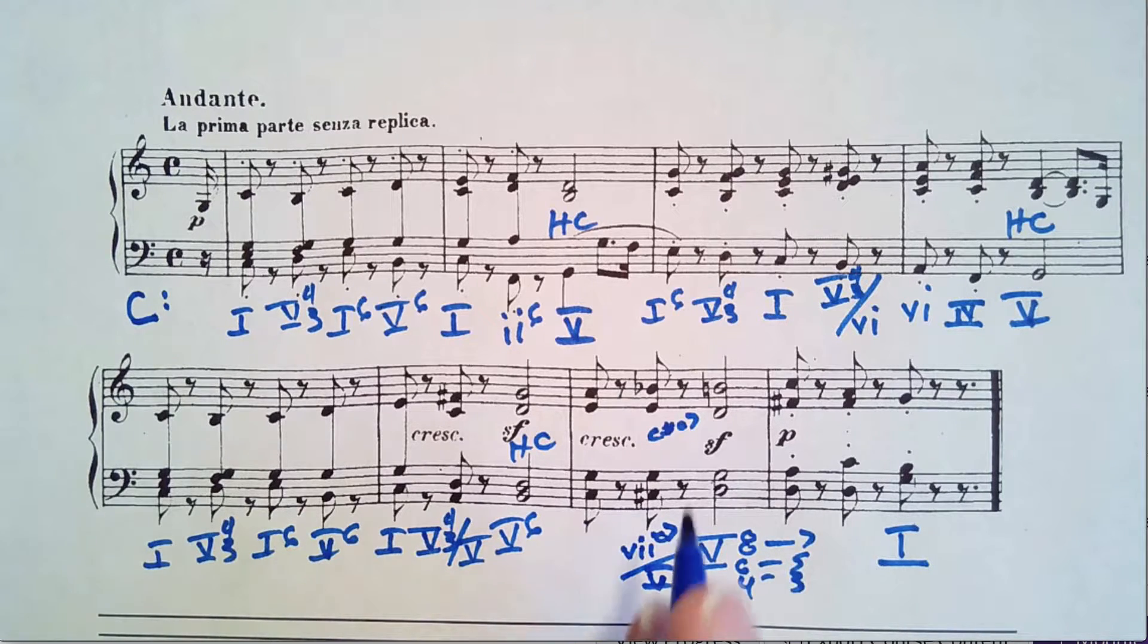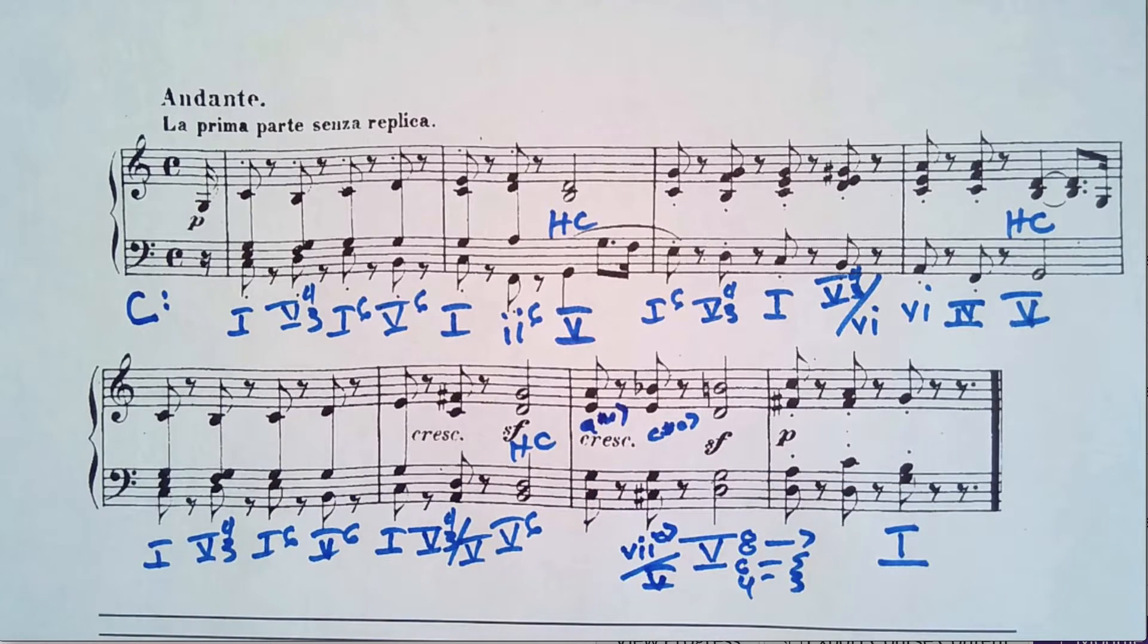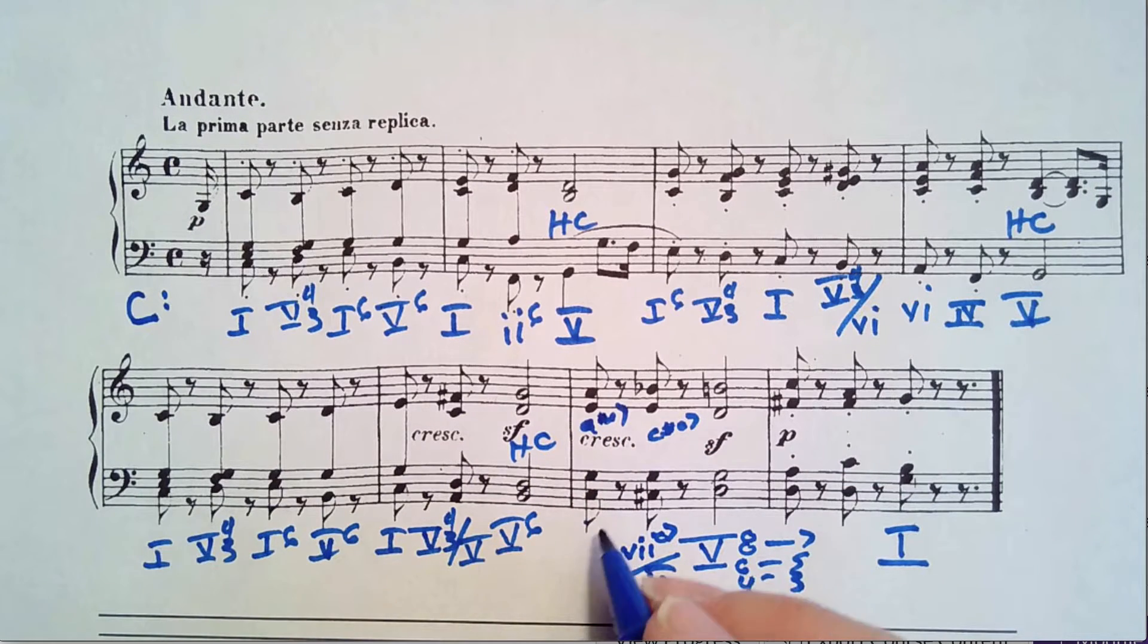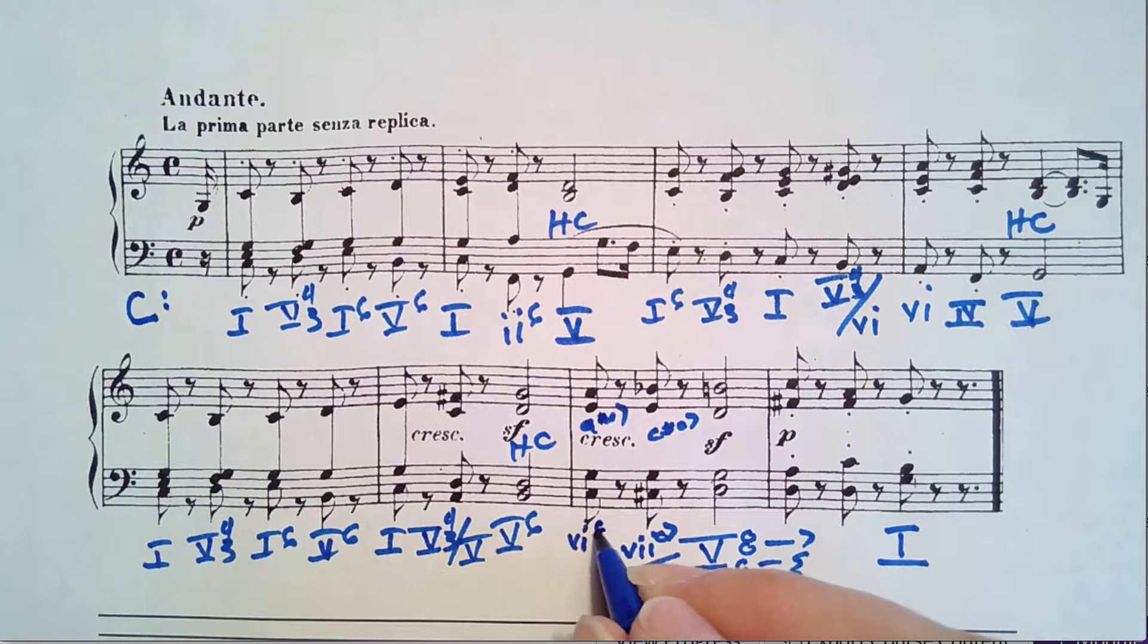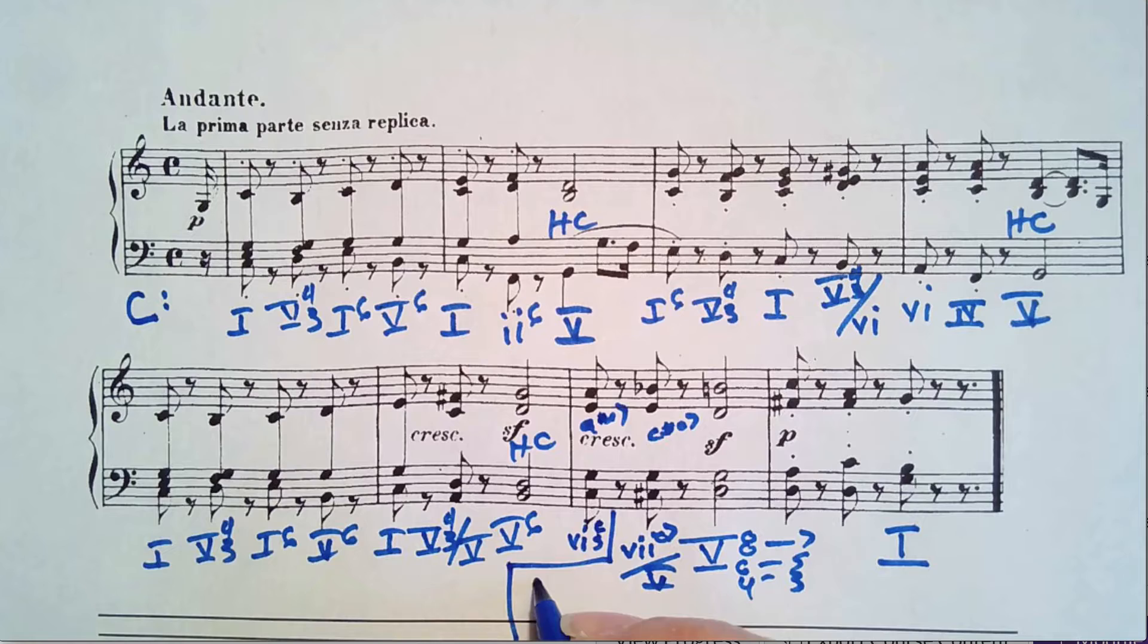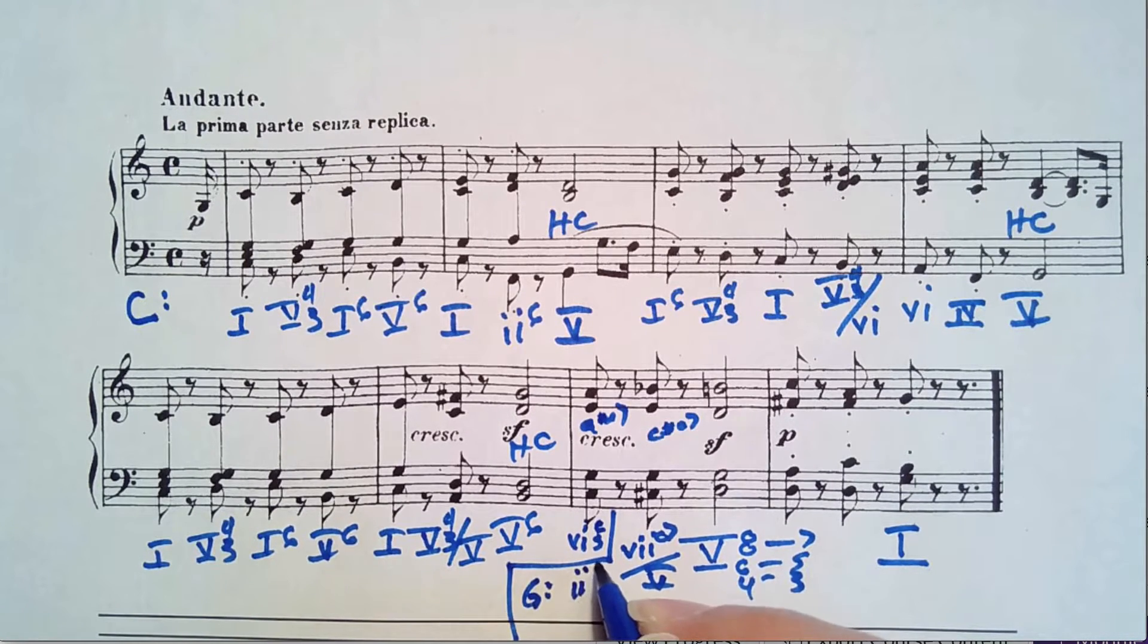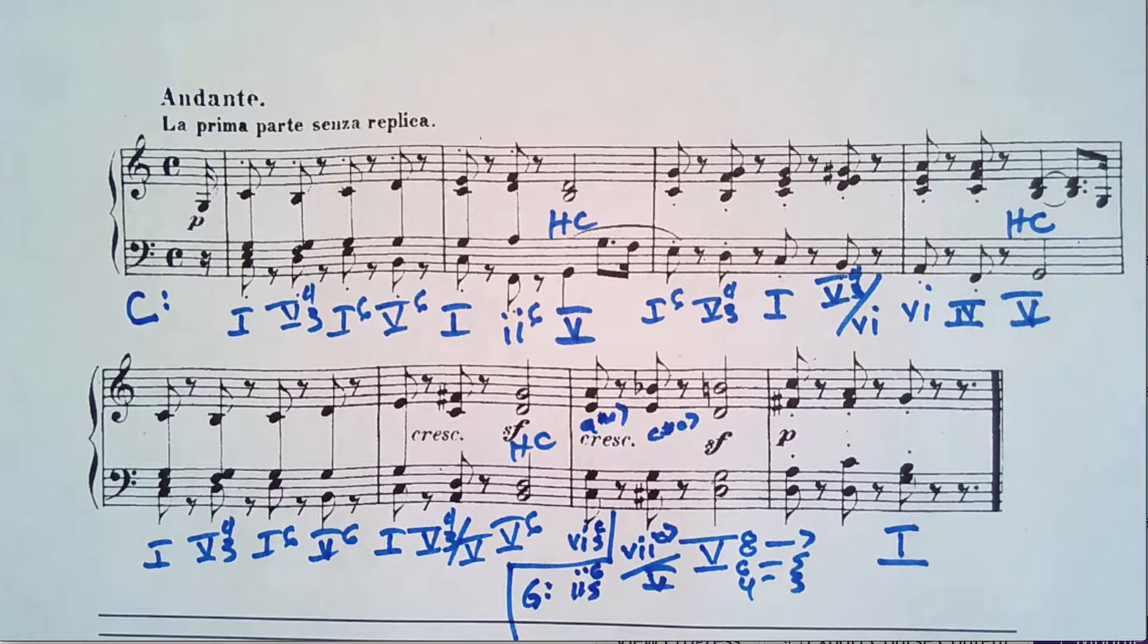So let's look at this chord right here. This is an A minor seven chord. A, C, E, G. In the key of C, that would be six, six, five, because it's in first inversion. And here in the key of G, this would be two, six, five. So hopefully your analysis matched that pretty closely.